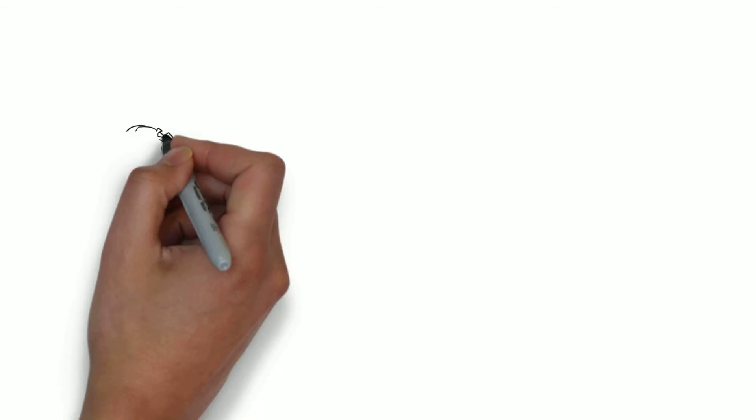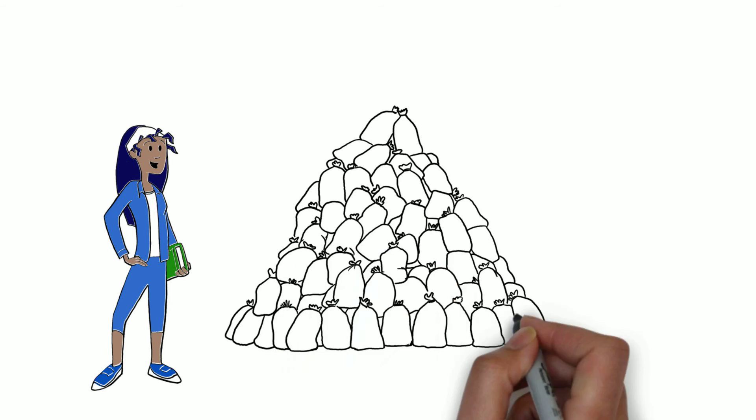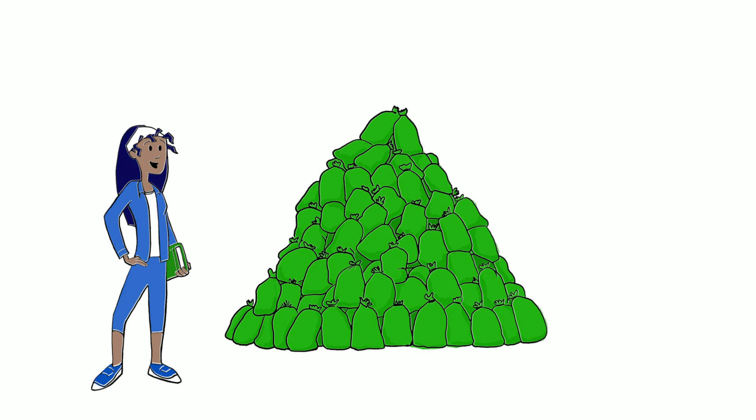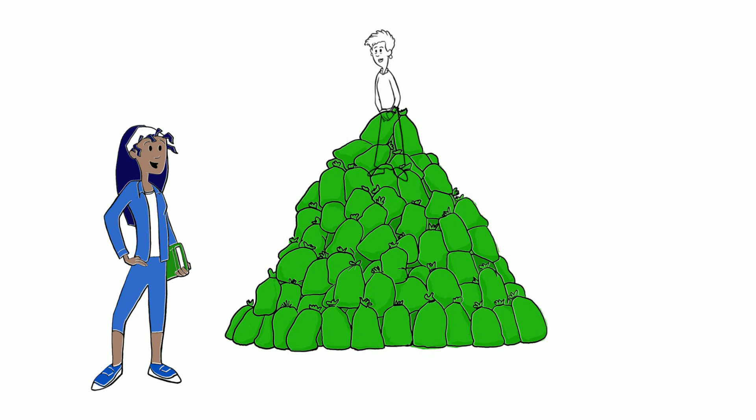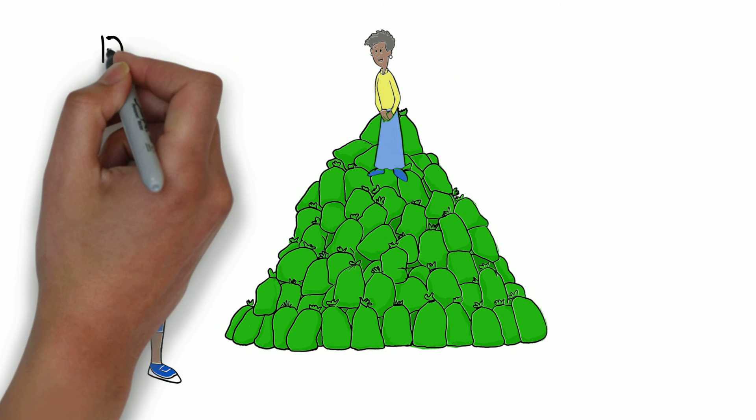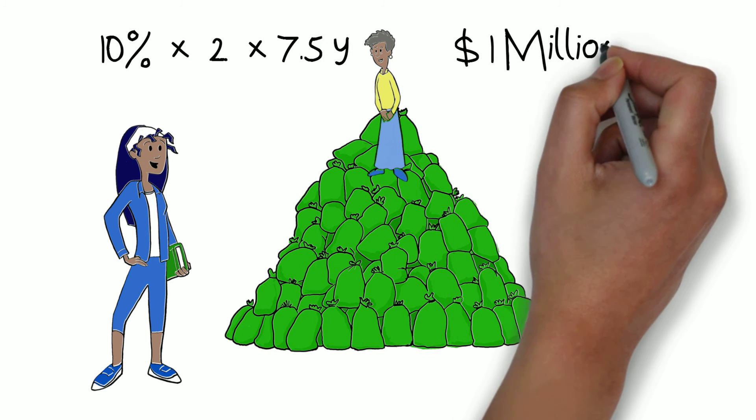The fourth puts her money in a broad stock index fund, which averages about 10% return. It doubles every seven and a half years. In 50 years, it doubles nearly seven times, and that initial $10,000 has become more than $1,000,000.